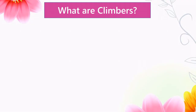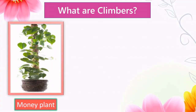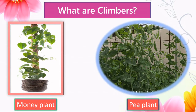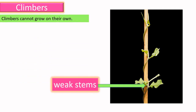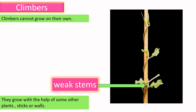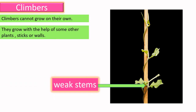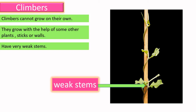What are climbers? Let us see some examples: money plant and pea plant. Climbers cannot grow on their own — they grow with the help of some other plants, a stick, or a pole. They have very weak stems.